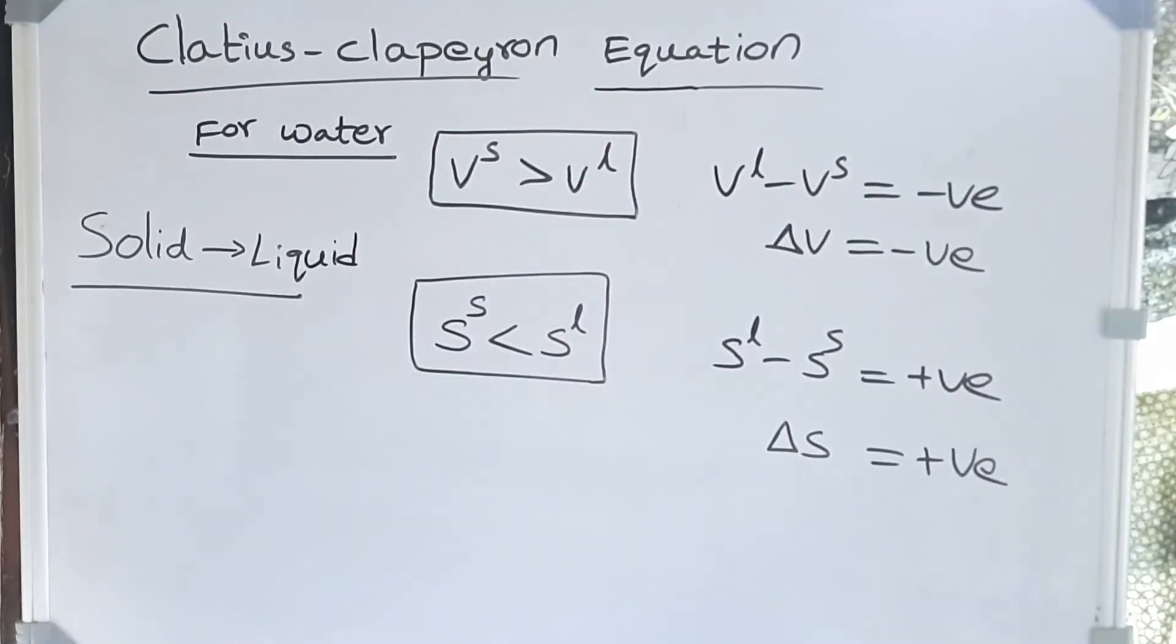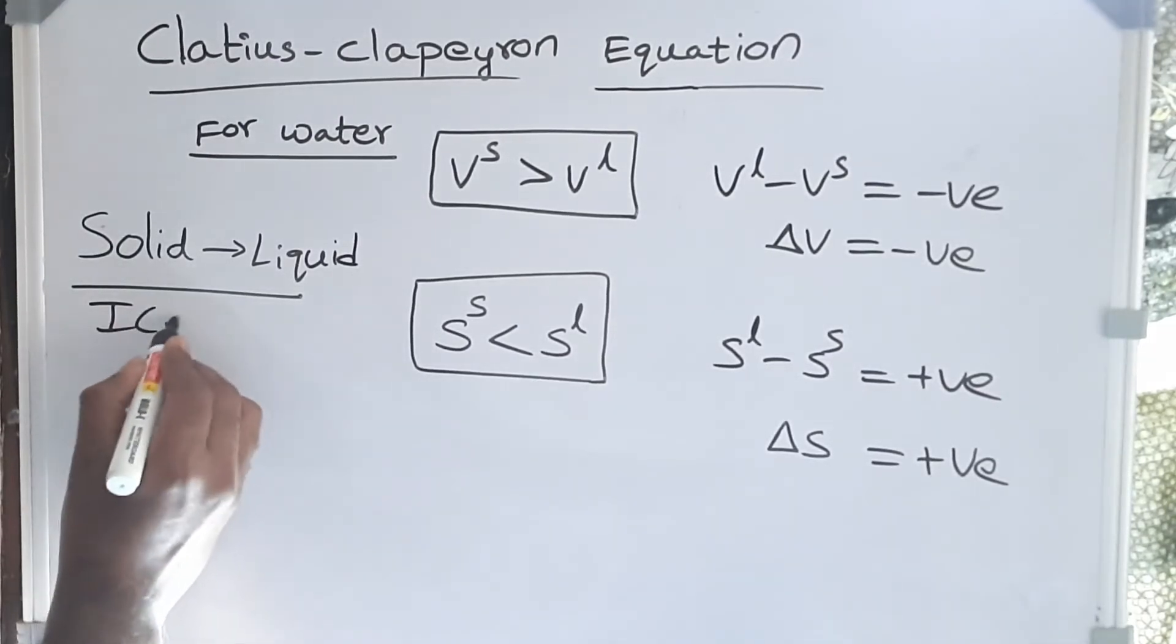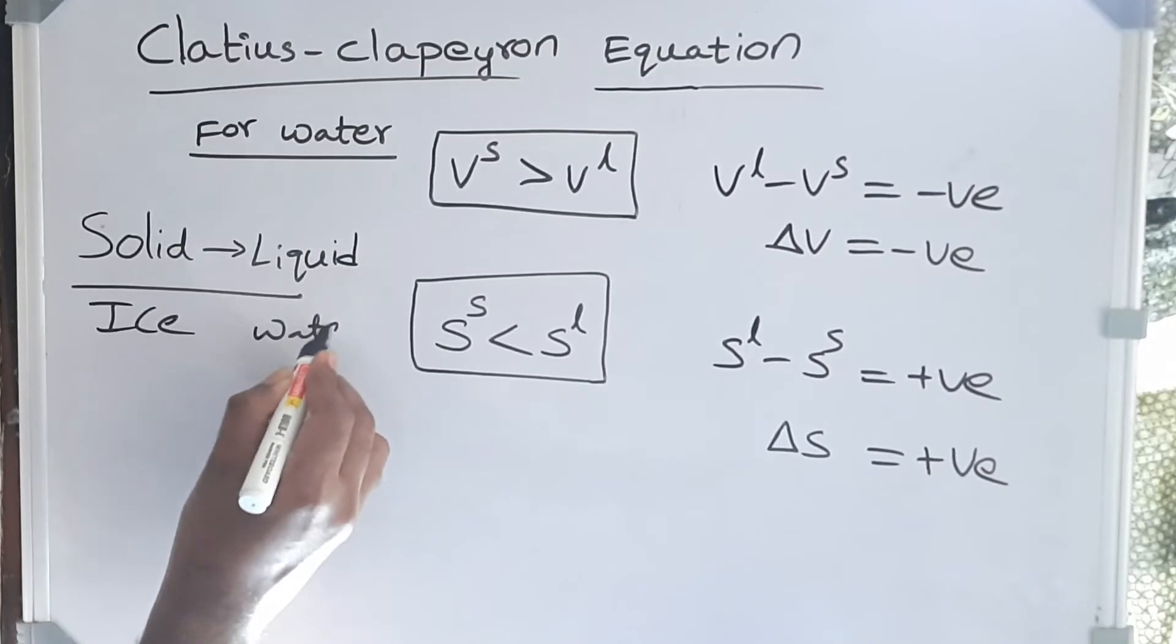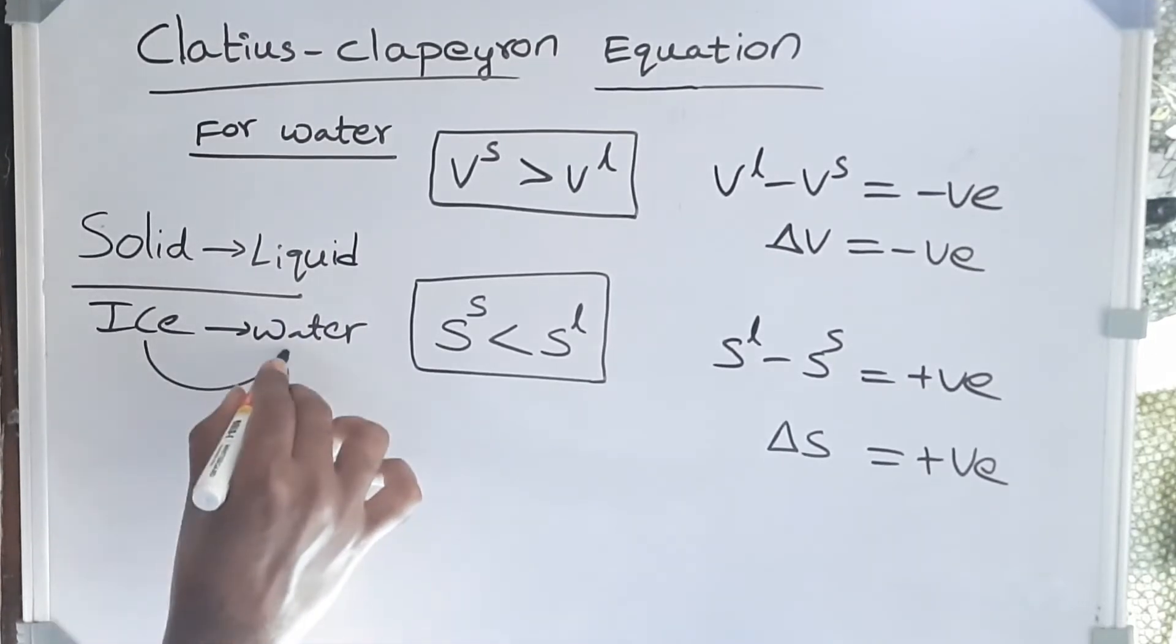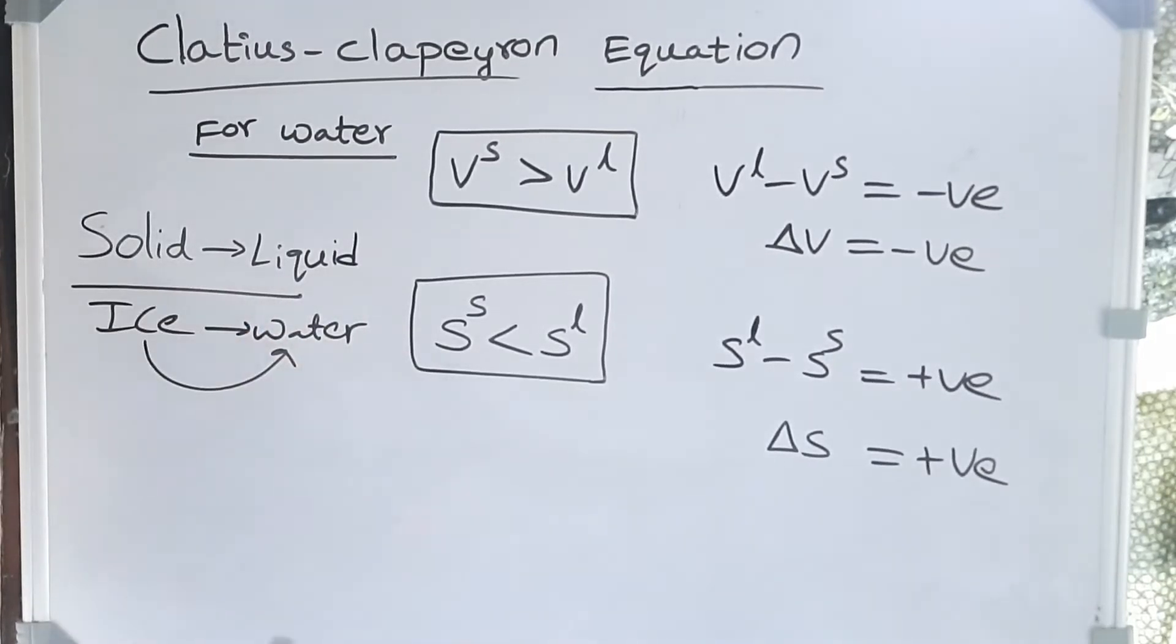Friends, when we consider the transformation of solid to liquid, ice to water, volume actually decreases, right? Because here ice is having more volume than water. So the product minus reactant, so volume of liquid minus volume of solid is negative because here solid is having more volume. And the entropy of liquid is always greater than the solid, so entropy of liquid minus entropy of solid is a positive value.